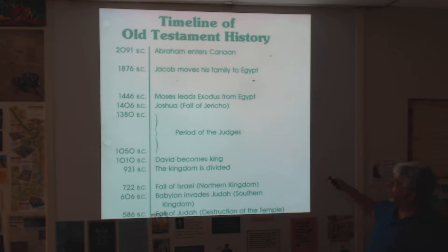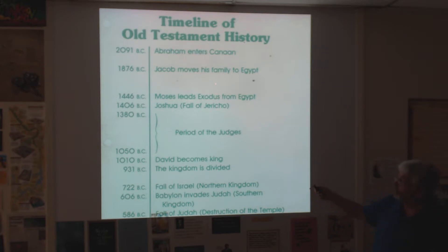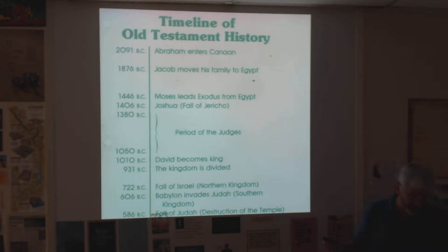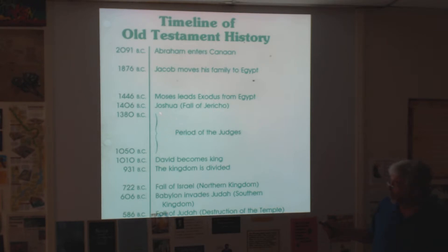Let's think back about where we've come from. We started with Abraham entering Canaan; he came originally from Ur. Jacob, the grandson of Abraham, moved his family to Egypt following Joseph. Four hundred years later, they had been enslaved. Moses was sent by God to lead them out of Egypt — the Exodus. He took them to Mount Sinai for the Ten Commandments. They eventually made it to the promised land of Canaan. Moses died, Joshua took them in, and the first city to fall was Jericho. After Joshua died, there was no leader in Israel — everyone did what was right in his own eyes, which we call the period of the Judges.